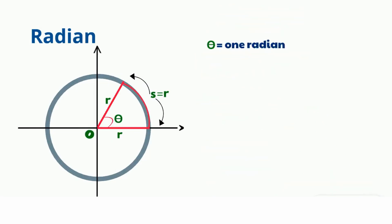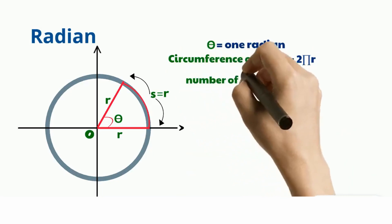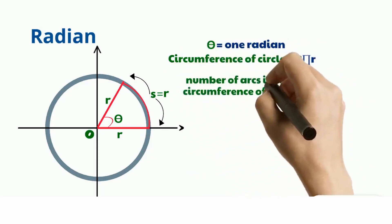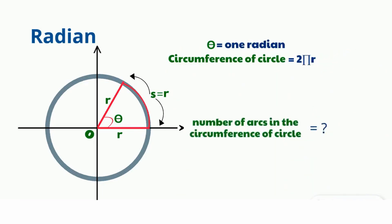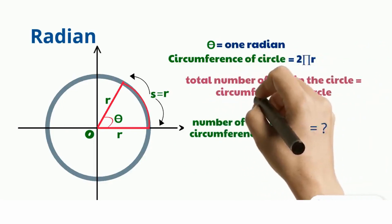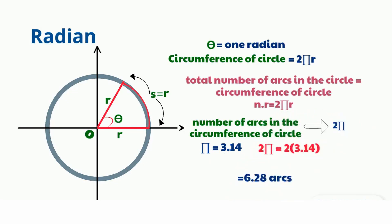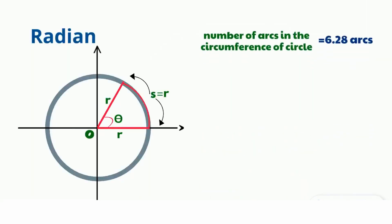Next, how many radians are in a circle? The circumference of a circle equals 2πr. The total number of arcs of length r that fit in the circumference is n × r = 2πr, so the number of arcs equals 2π. Since π is 3.14, we get 2π = 6.28. So there are 6.28 arcs in the circumference of the circle.